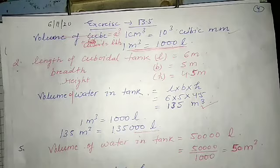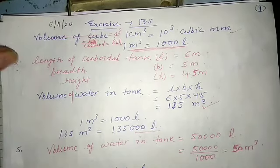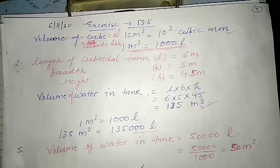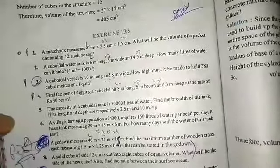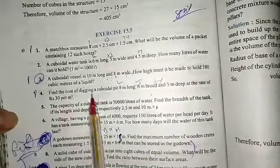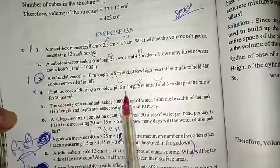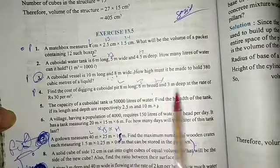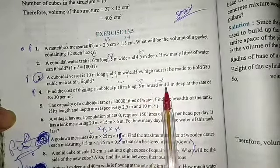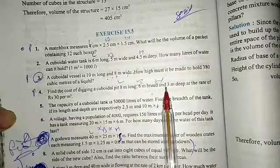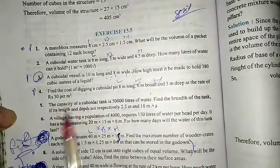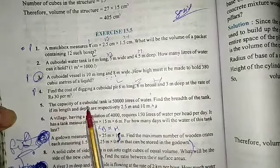The next question asks to find the cost of digging a cuboidal pit 8 meters long, 6 meters broad, and 3 meters deep. All units are the same, so we directly find the volume and then multiply it by 30 to get the cost.